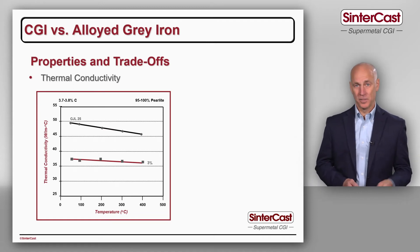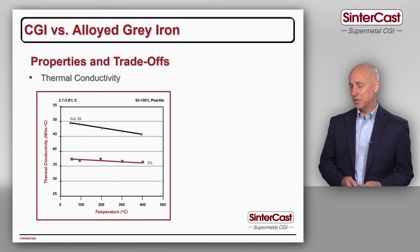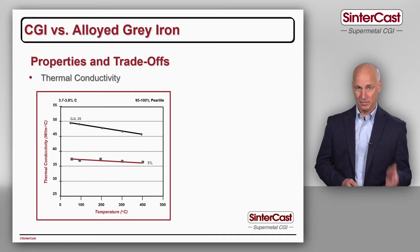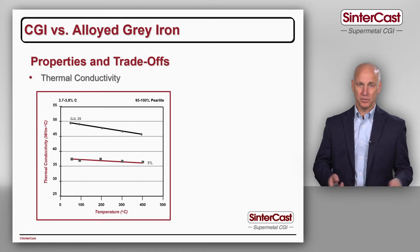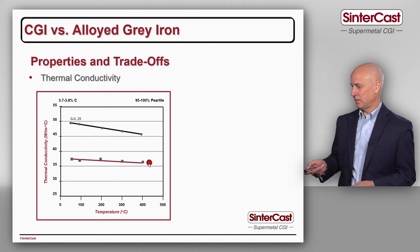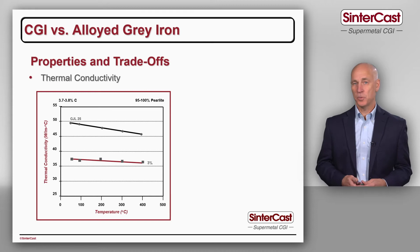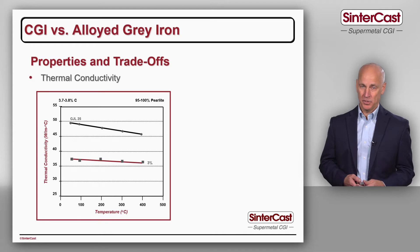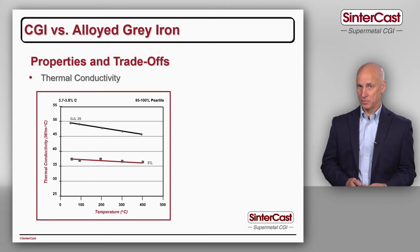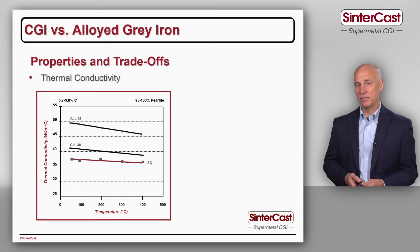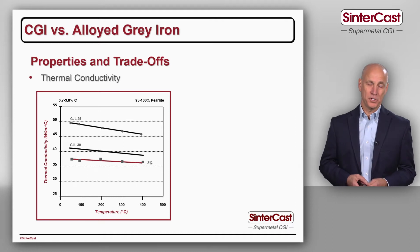The first thing to look at is the thermal conductivity. Here in this plot, we see the thermal conductivity of conventional grey cast iron and CGI with 3% nodularity as a function of temperature. We see that at flame deck temperatures of approximately 400°C, the CGI gives away about 20% thermal conductivity. But when we add alloying elements to grey cast iron, we restrict the electron mobility and reduce the thermal conductivity, so the thermal conductivity of alloyed grey iron is quite similar to CGI — at flame deck temperatures, only about a 5% difference.